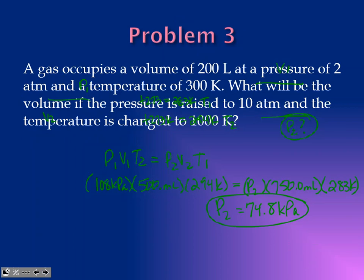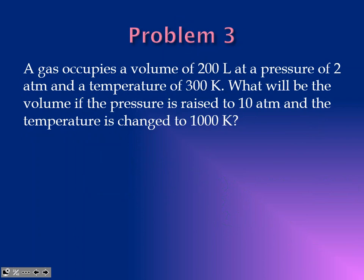Problem 3 becomes very repetitive as the process. The numbers only have one significant figure each, so when you calculate and get your answer, change it to one significant figure — the two zeros after would be filler zeros.